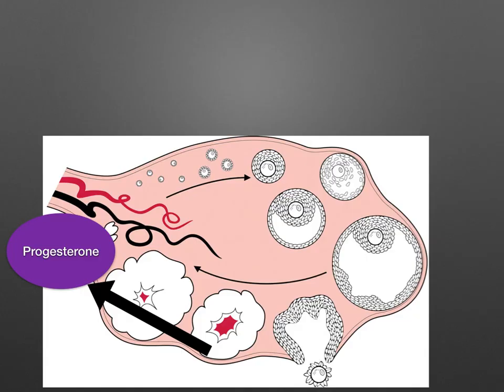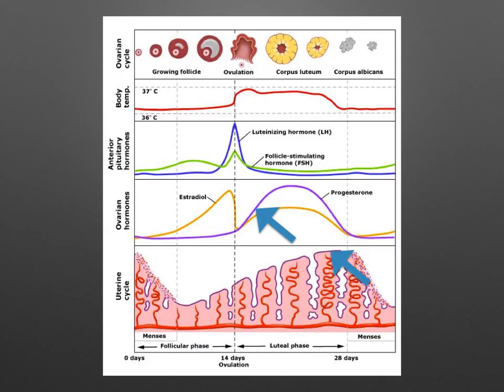Back inside the ovary, the follicle transforms into the corpus luteum. Under the influence of prolactin, this secretes progesterone and some oestrogen. Notice how the progesterone level starts to increase — this increase in progesterone develops the endometrium with increased blood supply and storage of glycogen and lipids in the cells, so the endometrium is now ready for implantation.